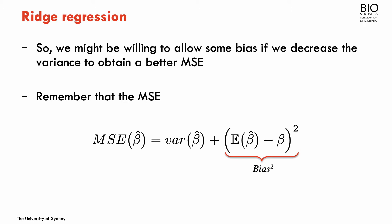Several decades ago, ridge regression was proposed to deal with this problem using the idea of trading bias for variance. The mean square error of an estimator can be decomposed into two parts: the variance of the estimator plus the square of its bias. For the maximum likelihood estimator, the bias term tends to zero, so the MSE is dominated by variance. By allowing some bias while decreasing variance substantially, we can achieve a better mean square error than with the OLS.